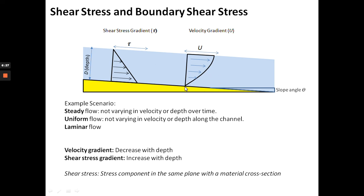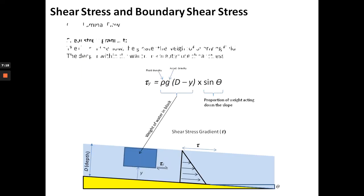The velocity gradient shows zero velocity at the bed increasing away from the bed. Now we add the shear stress gradient — and the pattern is the opposite. At the bed, shear stress is highest. Shear stress decreases as you move away from the bed upward. A reminder: shear stress is the stress component in the same plane with the material cross-section. For a laminar flow, you have higher shear stress near the bed which decreases as you move further upward.